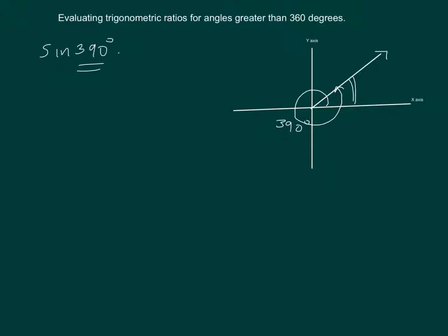So we are going to write this as sine of 360 plus 30 degrees. Clearly this is 30 degrees and the x-axis is the line of reference.